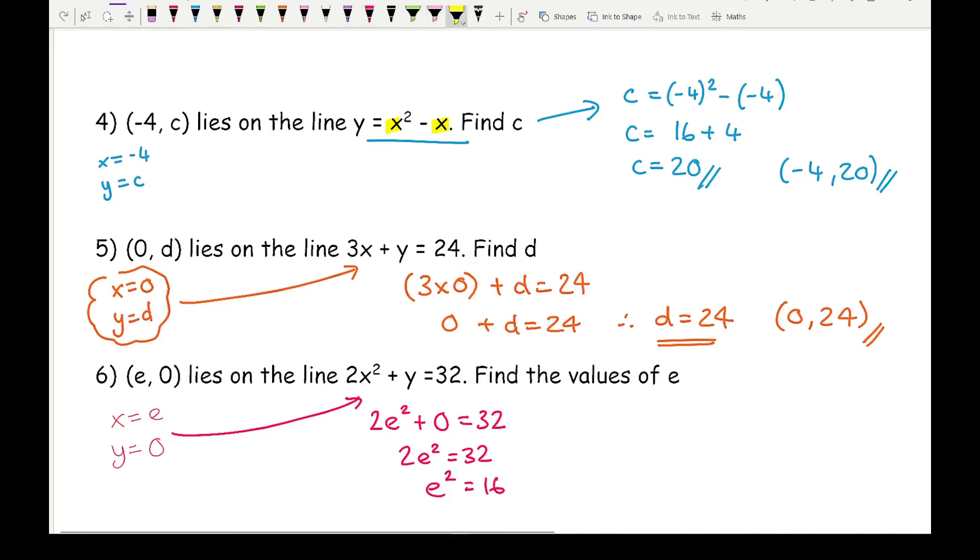Note in the question it says find the values of e, plural. So that means there's going to be more than one value of e. Solving this, e squared equals 16. So e equals plus or minus the square root of 16. So e equals plus or minus 4, which I can write as e equals minus 4 or positive 4.